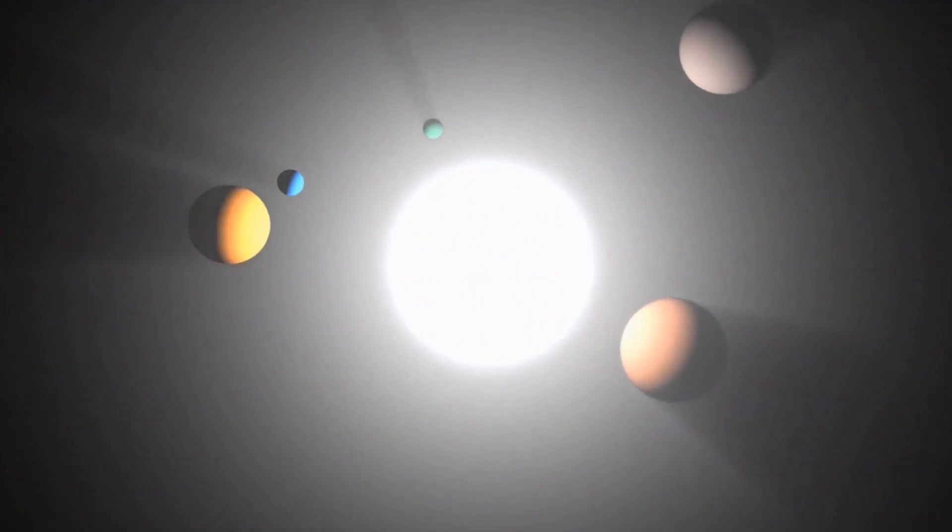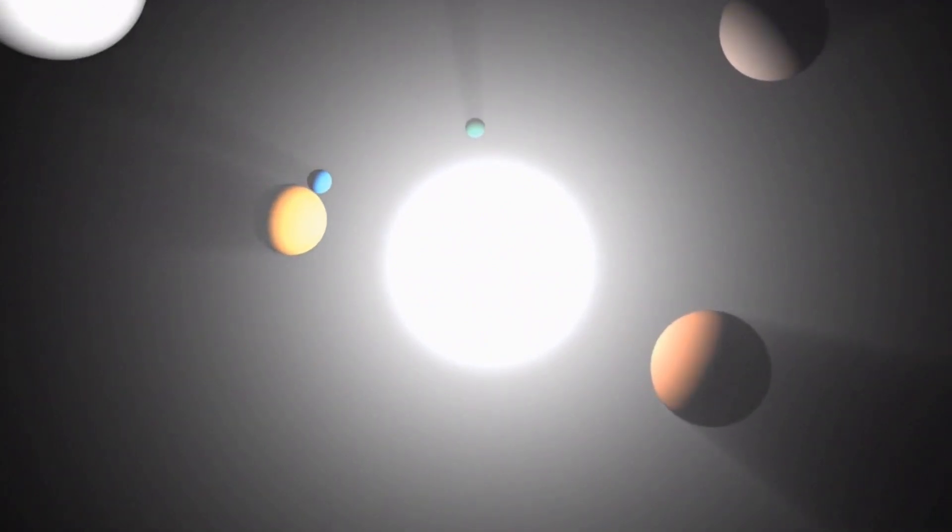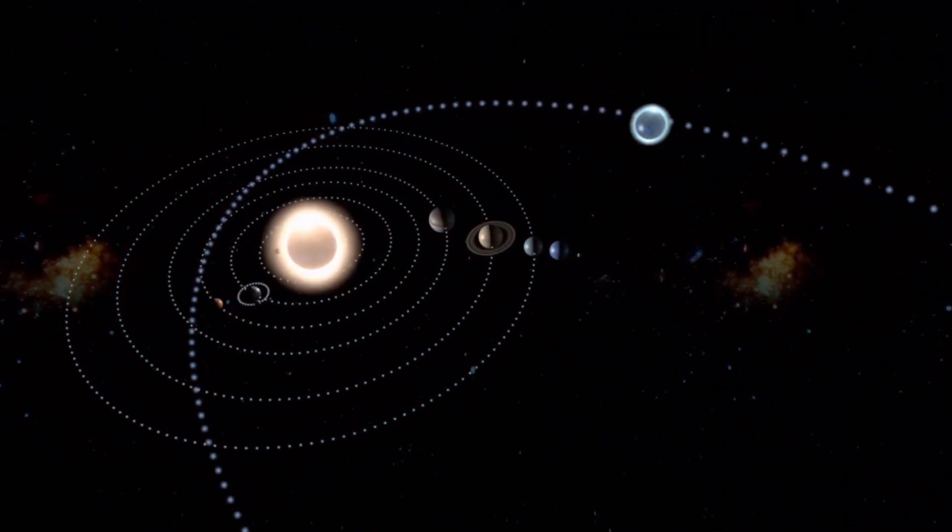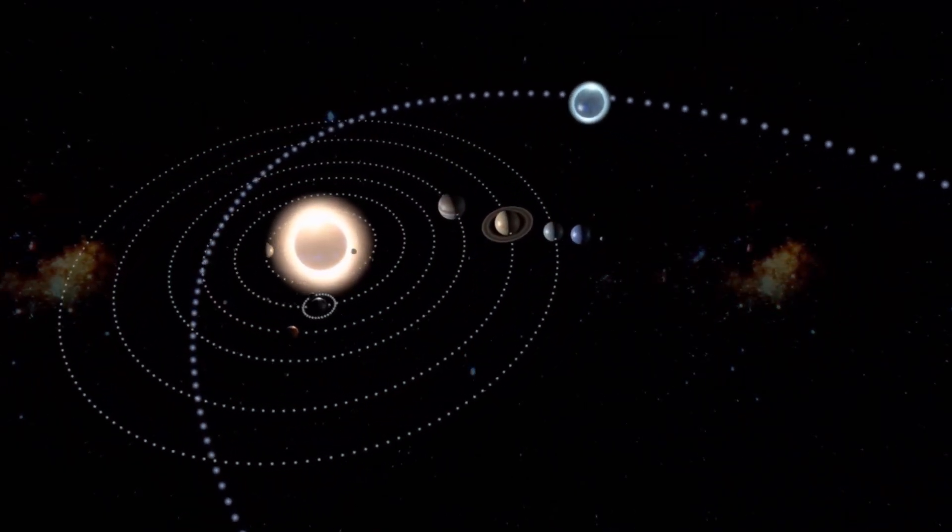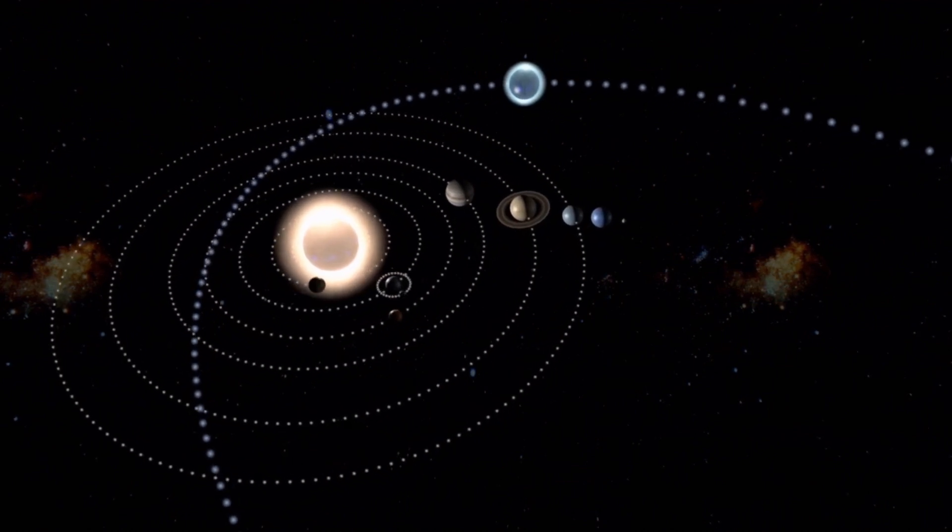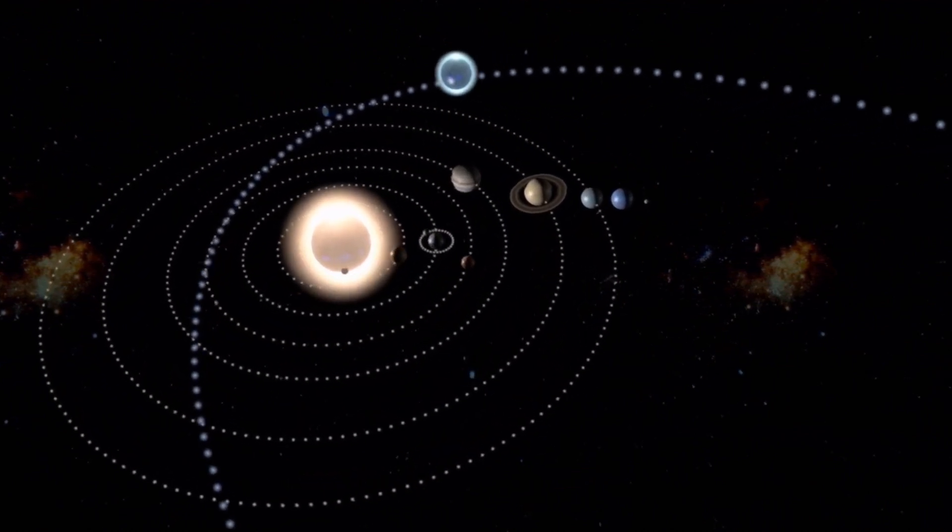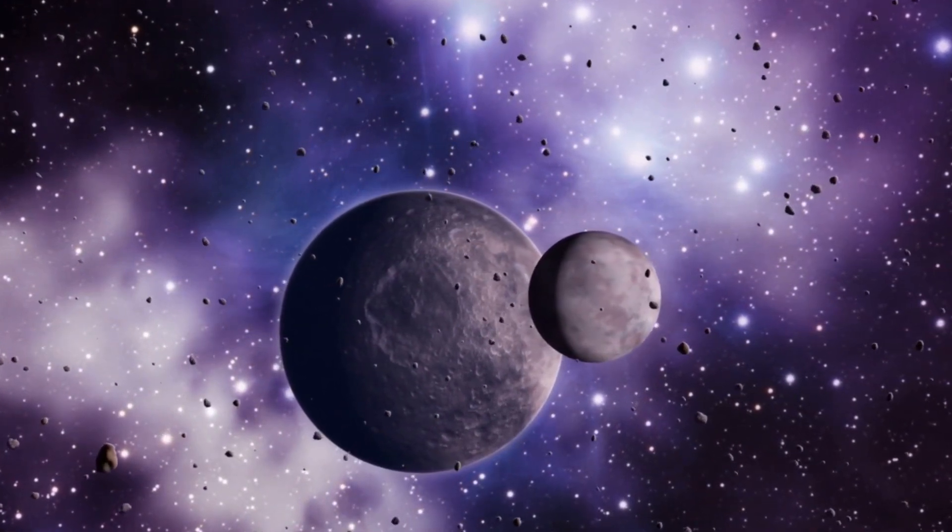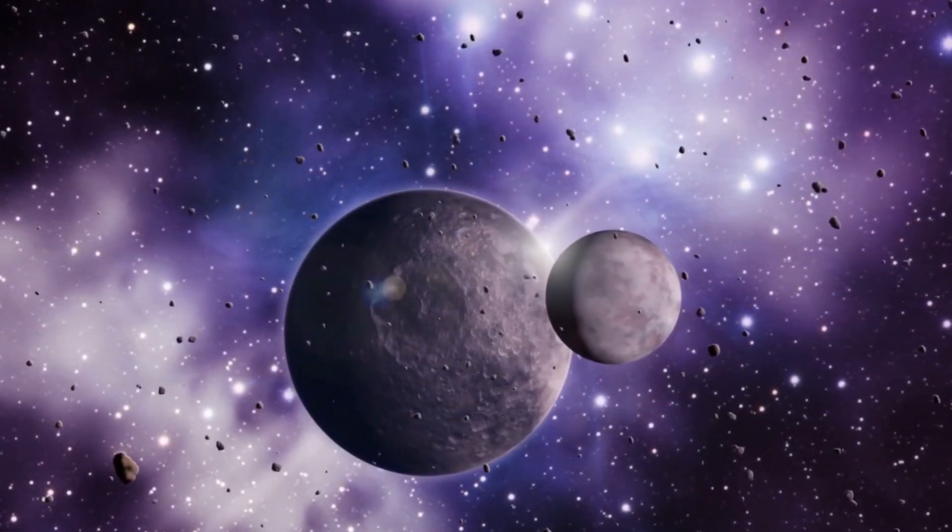Theoretical simulations also suggest that Planet Nine likely possesses an eccentric orbit, meaning it is not a perfect circle but elongated, taking it closer to the Sun at certain points in its orbit and farther away at others. This characteristic may explain why it has been so challenging to observe directly, as it could be relatively far from the Sun in its current position.